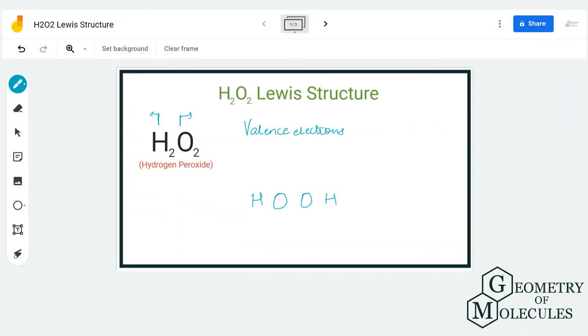Hi guys, welcome back to our channel. Today in this video, we are going to look at the Lewis structure for H2O2, which is also known as hydrogen peroxide or dihydrogen dioxide because it has two hydrogen atoms and two oxygen atoms.